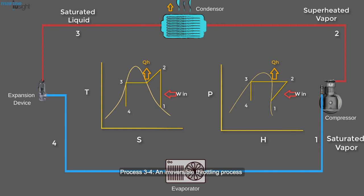Process 3-4: An irreversible throttling process due to expansion valve in which the temperature and pressure decrease at constant enthalpy. The refrigerant enters the evaporator at state 4 as a low-quality saturated mixture.